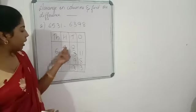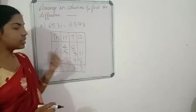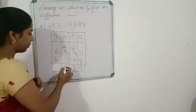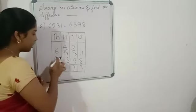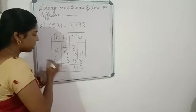Four minus three is one. Six minus six is zero. So the answer is one hundred thirty-three — it is a three-digit number.